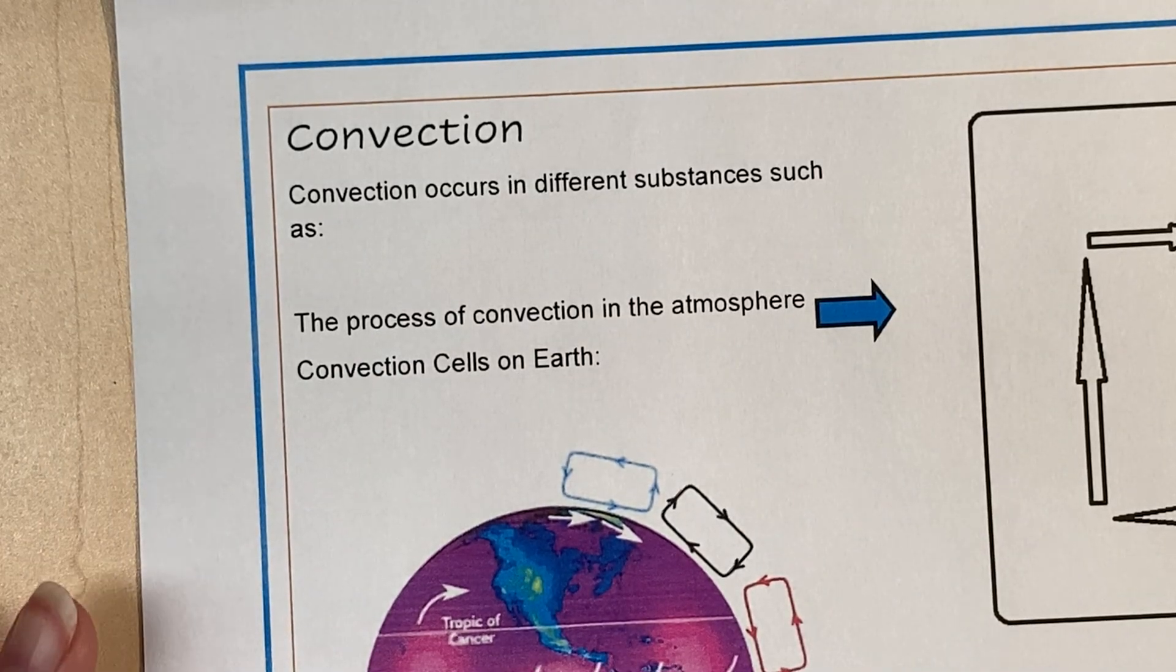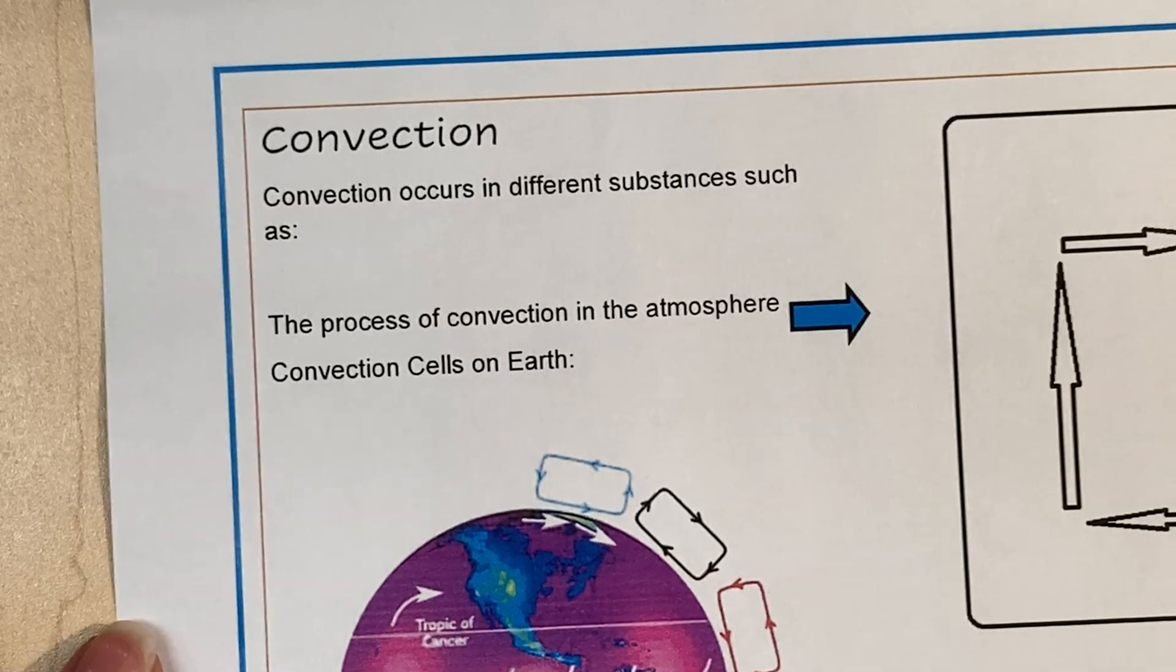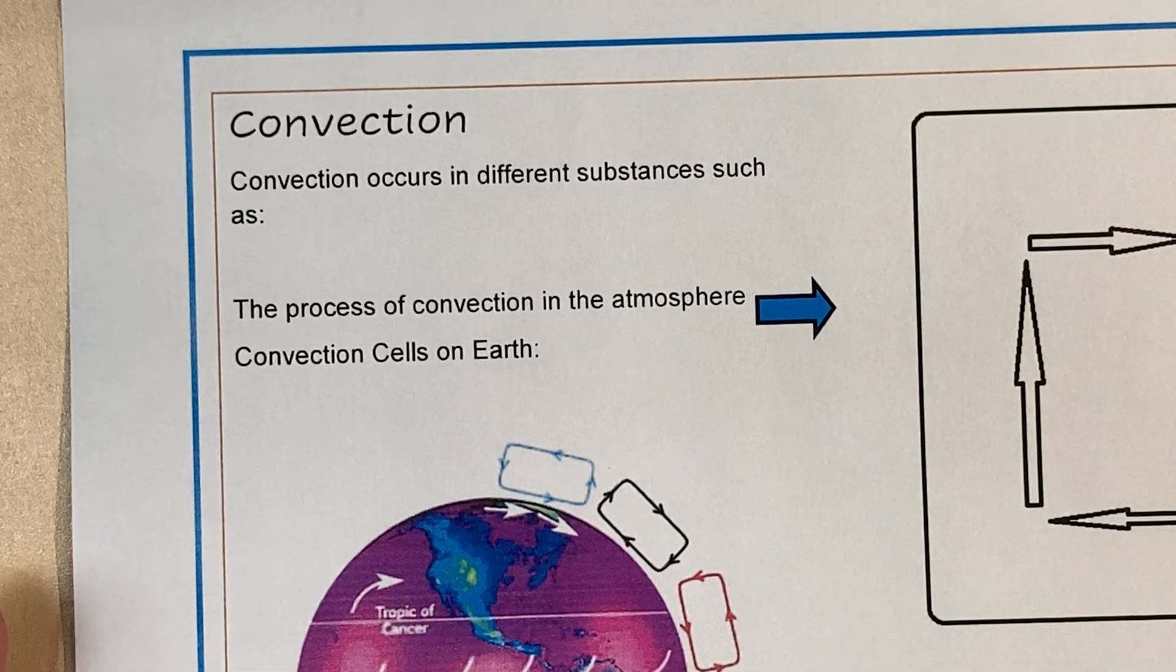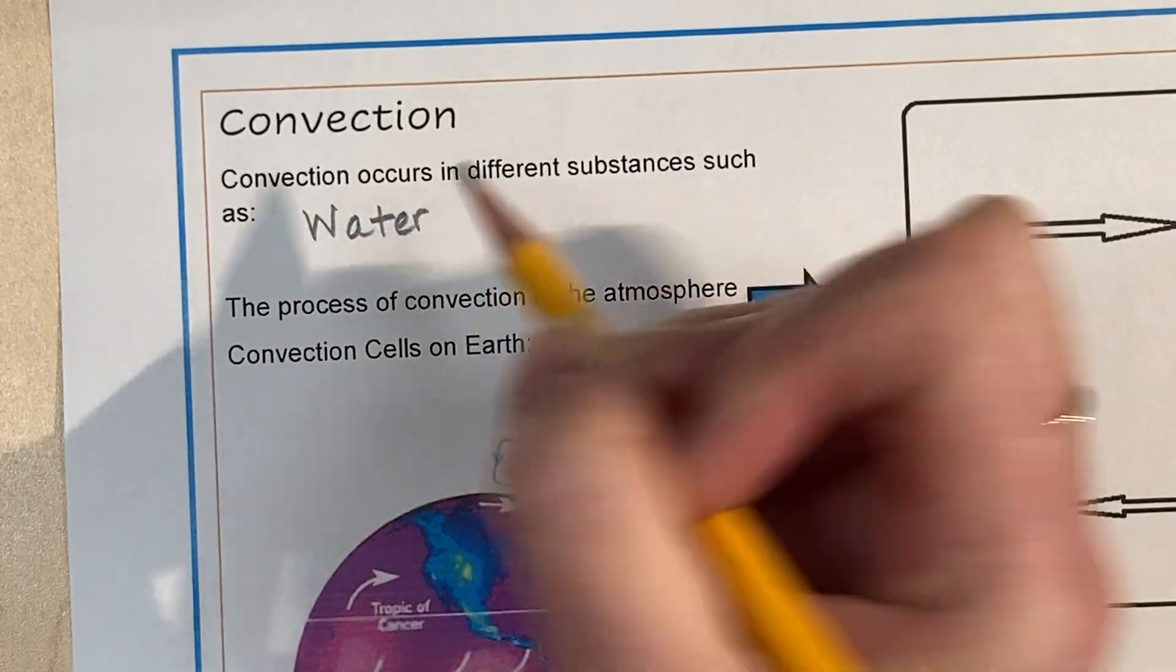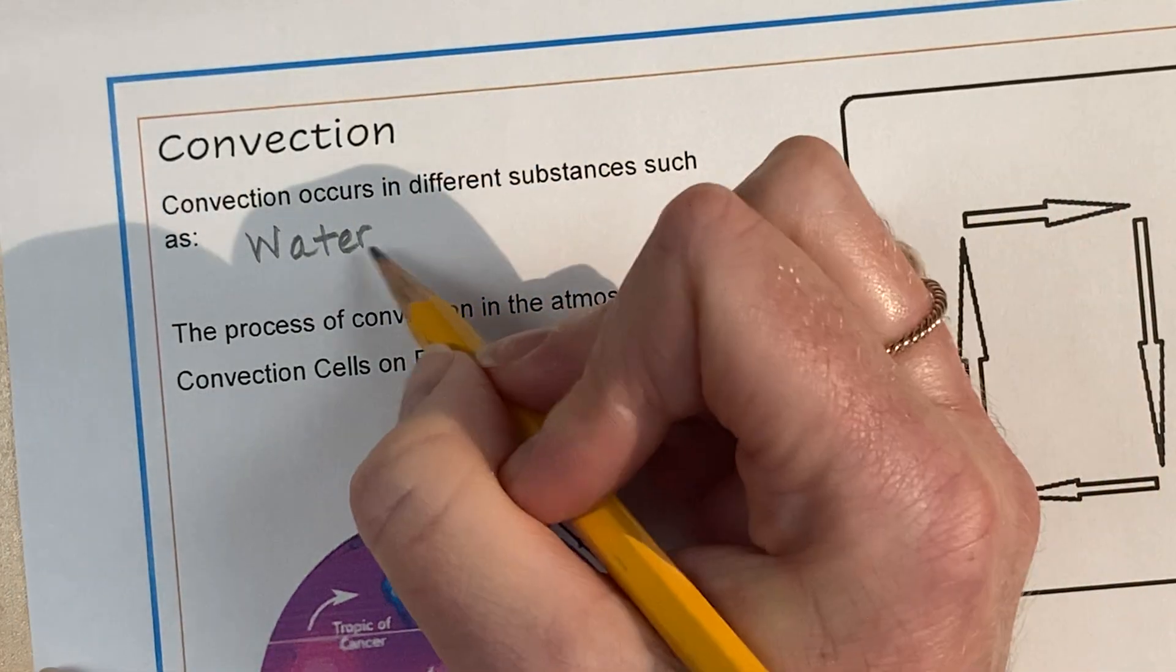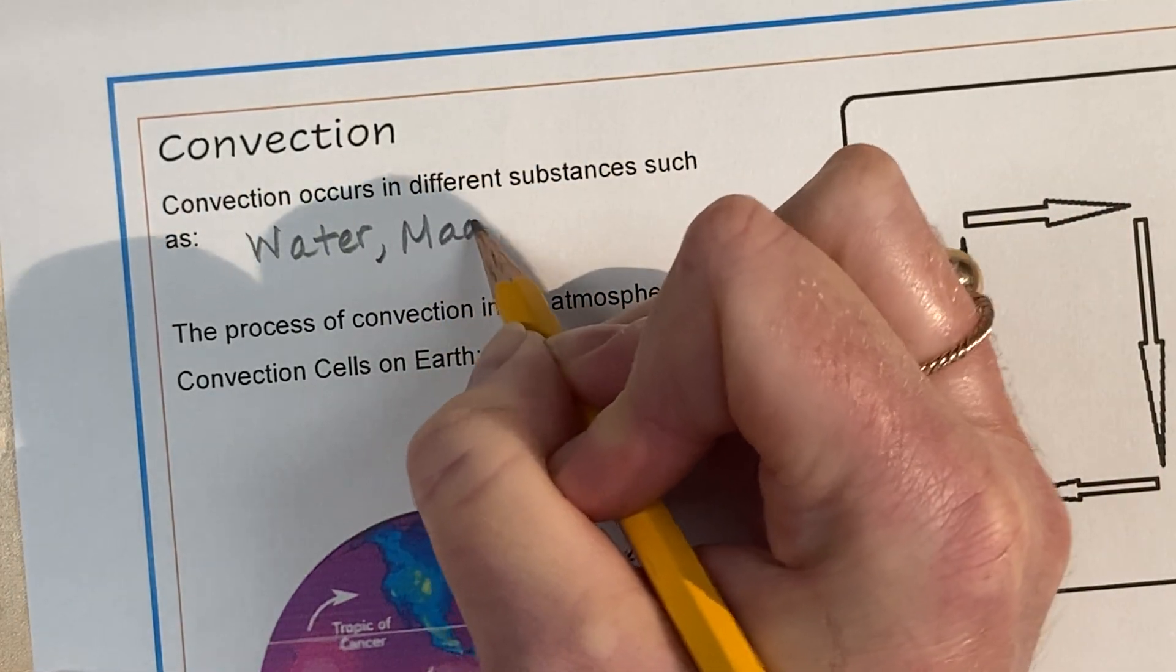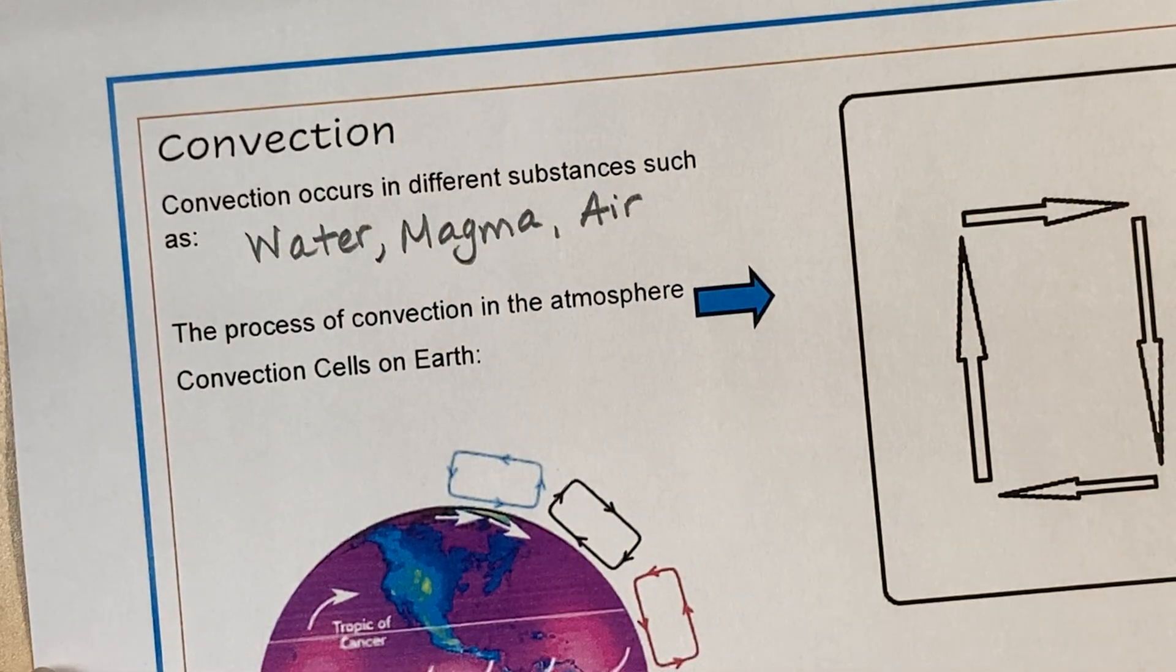The next thing you need to know about for atmospheric science is convection. Convection occurs in different substances like water in the ocean, water in other places, magma with plate tectonics. It also occurs in the air.